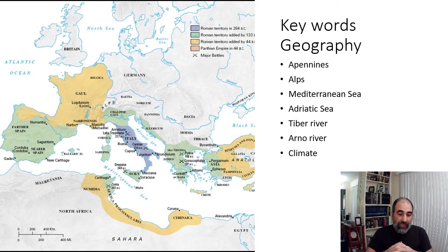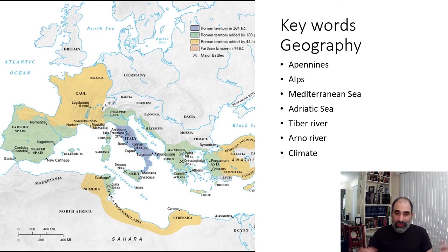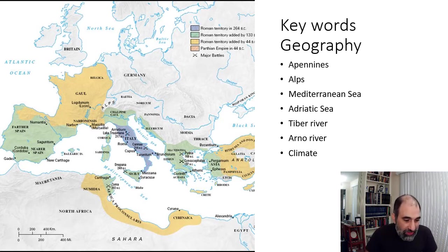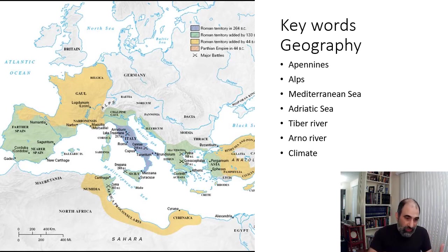Another really important element of geography is climate. One of the things to keep in mind is the climate in Italy. I always ask my students: what's the climate like in Italy? It's very much the same climate we have in Southern California. Think about all the resources that California has — coastline, good weather, it's easy to grow crops and food. Italy has that same advantage. That climate makes it easy to grow food and crops — not too hot, not too cold — and that's a big advantage for allowing a civilization to grow and develop.